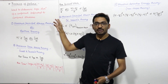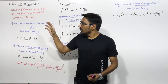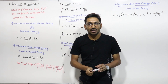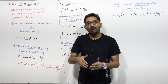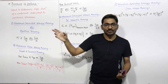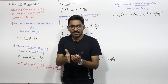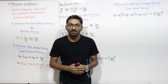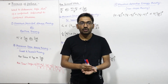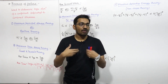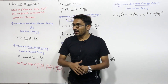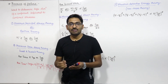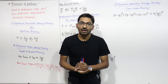The next topic is the theories of failure. Theories of failure are used to determine the safe dimension of a component when that structure or member is subjected to combined stresses. We have already seen that in combined stresses, what is the shear stress, normal stress on some oblique plane, and what is the maximum normal stress induced in that member. Theories of failure can give you a safe dimension when a member is subjected to combined loading.